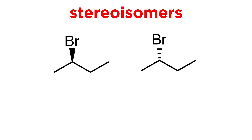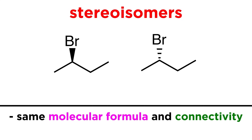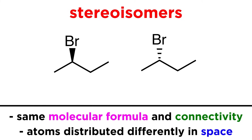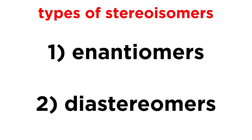Then there are stereoisomers. These are molecules that have the same molecular formula as well as the same connectivity, but they differ in the way the atoms are arranged in three-dimensional space.